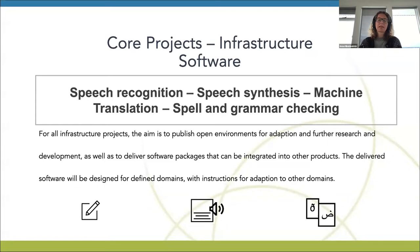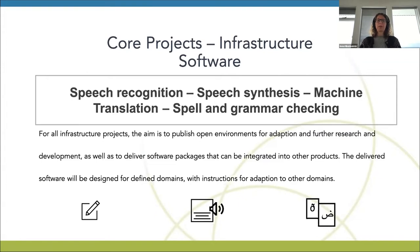The infrastructure software projects are divided into four core areas: speech recognition, speech synthesis, machine translation, and spell and grammar checking. For all infrastructure projects, the aim is to publish open environments for adoption and further research and development, as well as to deliver software packages that can be integrated into all products. The delivered products will be designed for defined domains with instructions for adaption to other domains. These software packages are meant to be of use in language technology applications and user applications.